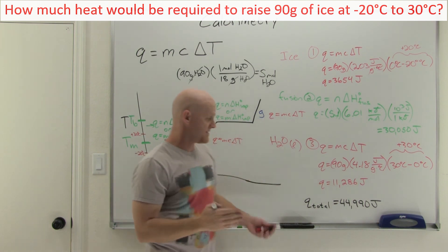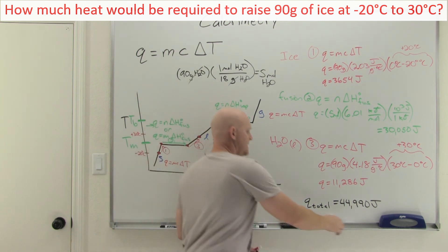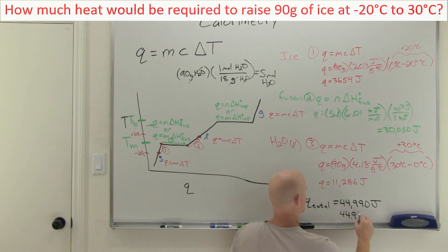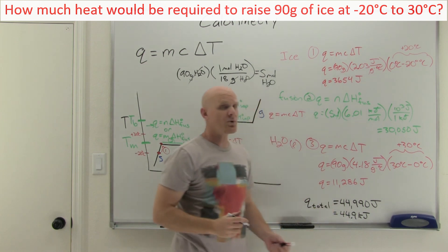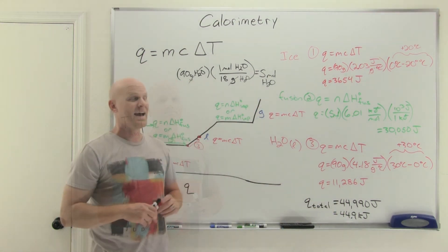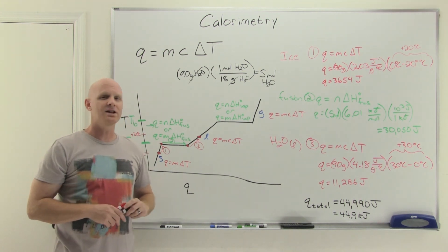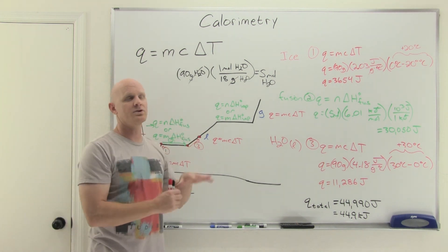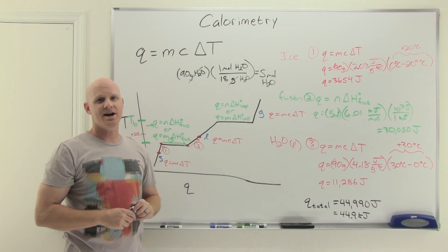So the total heat required is approximately 44,990 joules or 44.9 kilojoules — either answer could be correct on a multiple choice exam depending on the units requested. That's calorimetry. If you found this lesson helpful, please give it a like and a share. If you're looking for the study guide or practice problems on calorimetry, check out the premium course at chadsprep.com.